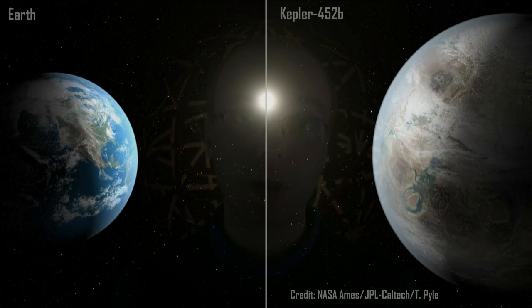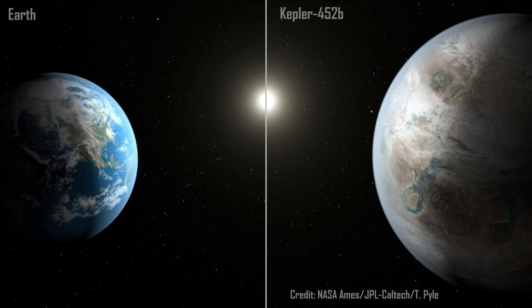It's certainly an interesting time in astronomy, with recent results from the Kepler Space Telescope suggesting that there could be as many as 40 billion Earth-sized planets in the habitable zone of their stars, just within our galaxy.